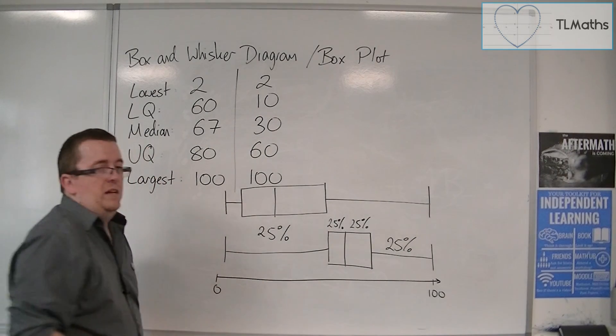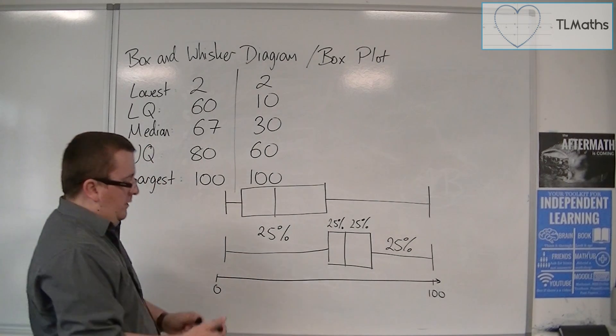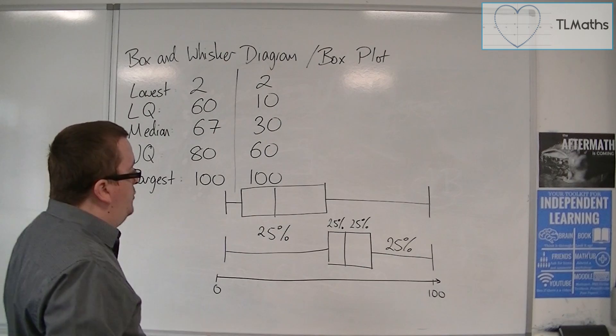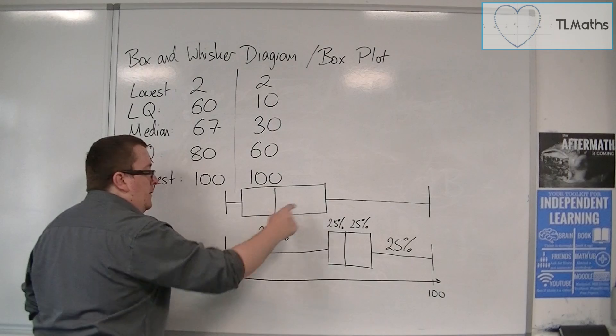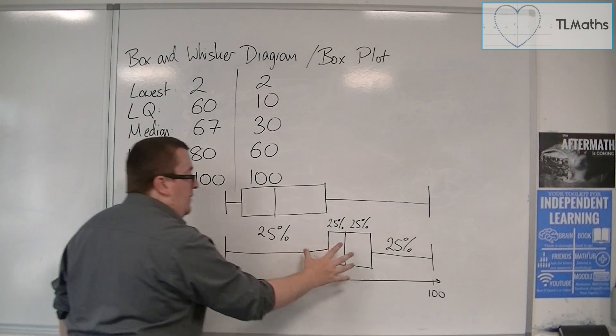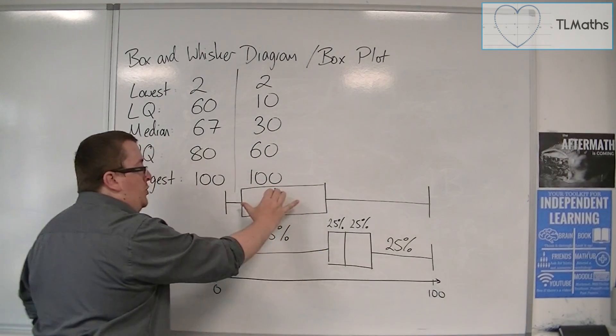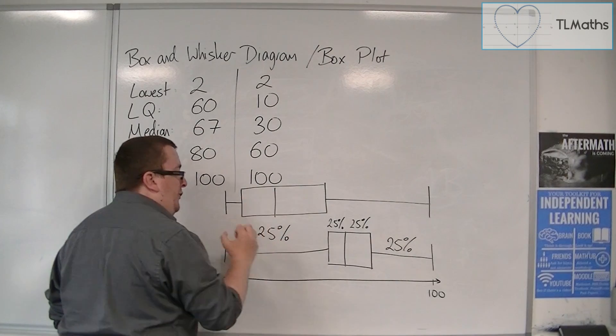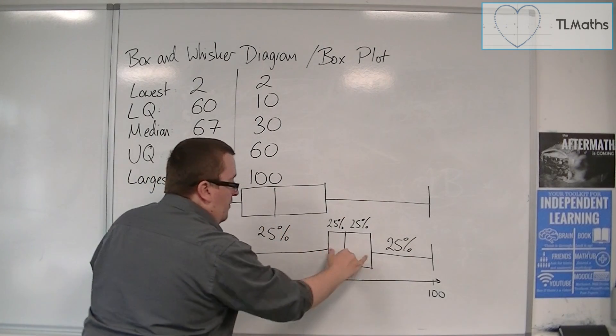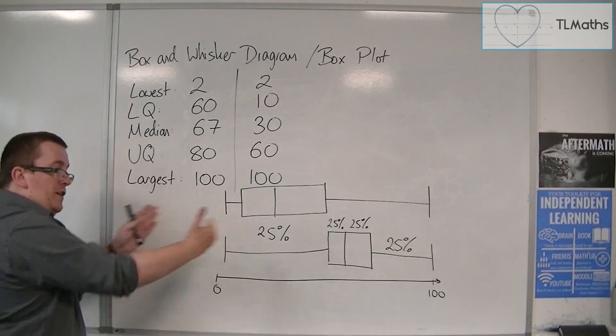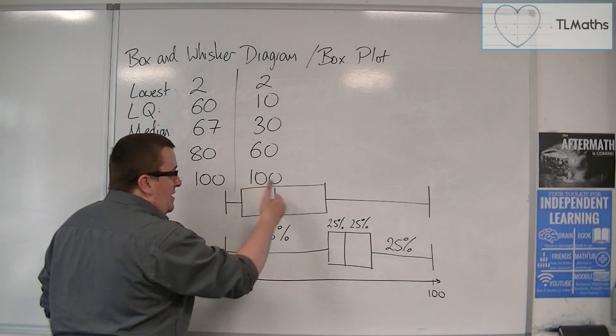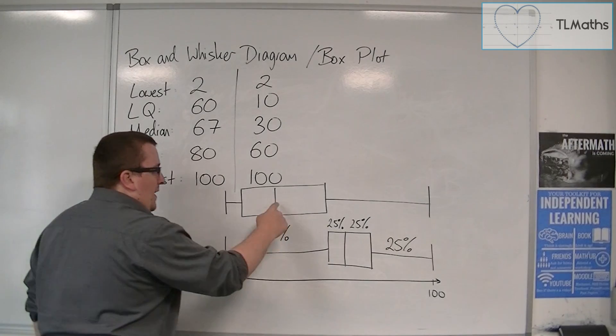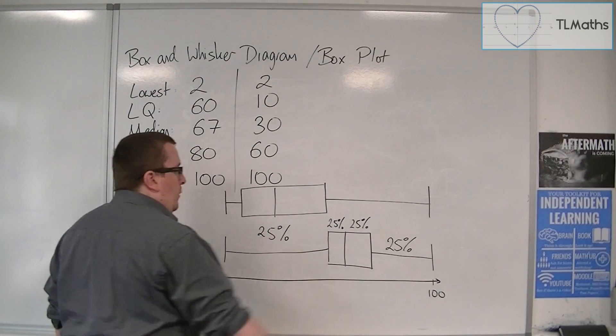Now, how can I compare these? Well, one thing to notice is that on average, this set of data has lower scores than this set of data, because you can clearly see that that box is lower than that one, so further to the left. We can also see that by the median; this median is lower than that one.